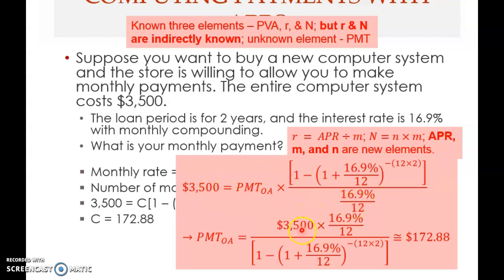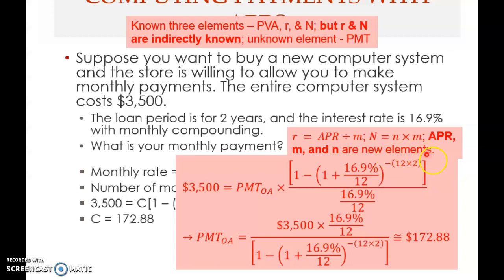Rearranging to solve for the payment, you bring the 3,500 over to the side and divide. The answer is $172.88. This is the same problem type as before — the only difference is that r is not given directly. You're given APR, so you must compute r. You also have to compute capital N because it's compounded 12 times a year, not once. That's the key difference; otherwise, the formula is the same.